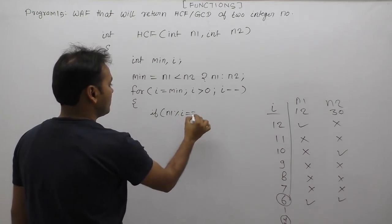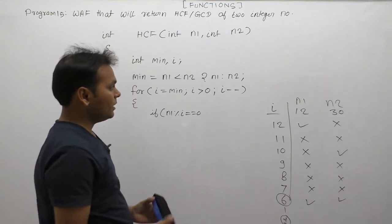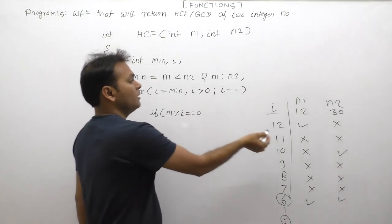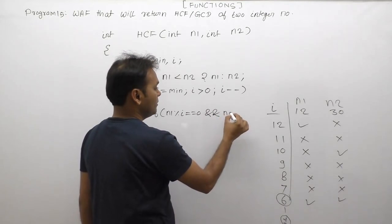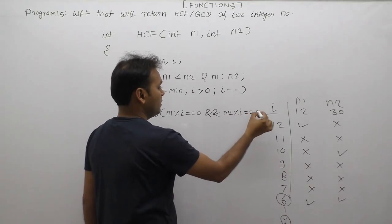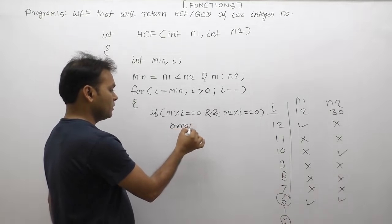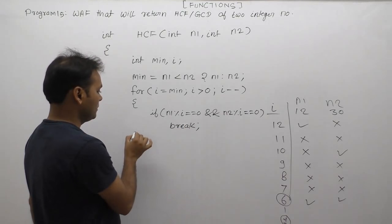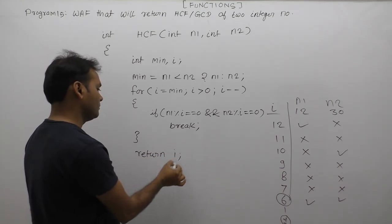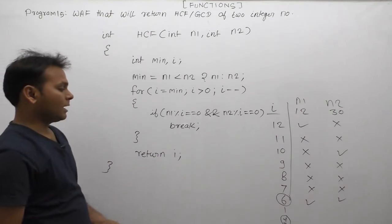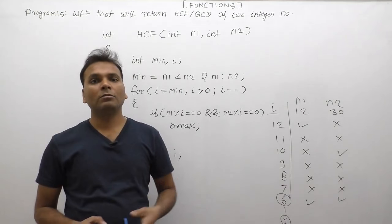The condition inside the loop is: if (n1 % i == 0 && n2 % i == 0), meaning if both n1 and n2 are divisible by the current value of i, then immediately break the loop because there is no need to continue further. After breaking, return the value of i, which will be either 6 or 1 depending on the inputs. This is the complete logic for calculating the HCF of two integer numbers.